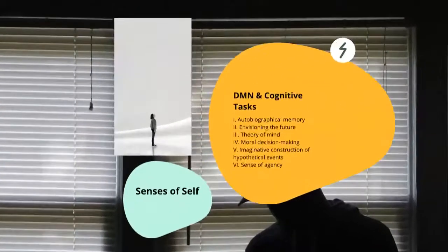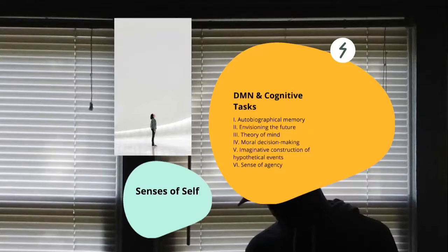I want to look more specifically at a broader view of the default mode network and the cognitive tasks associated with it. As we've already said, it is associated with autobiographical memory, but also it is involved when we're envisioning the future, theory of mind about what another individual may be thinking, moral decision-making, imaginative constructs of hypothetical events — the what-if kind of thinking — and also a sense of agency, the awareness of self as agent.